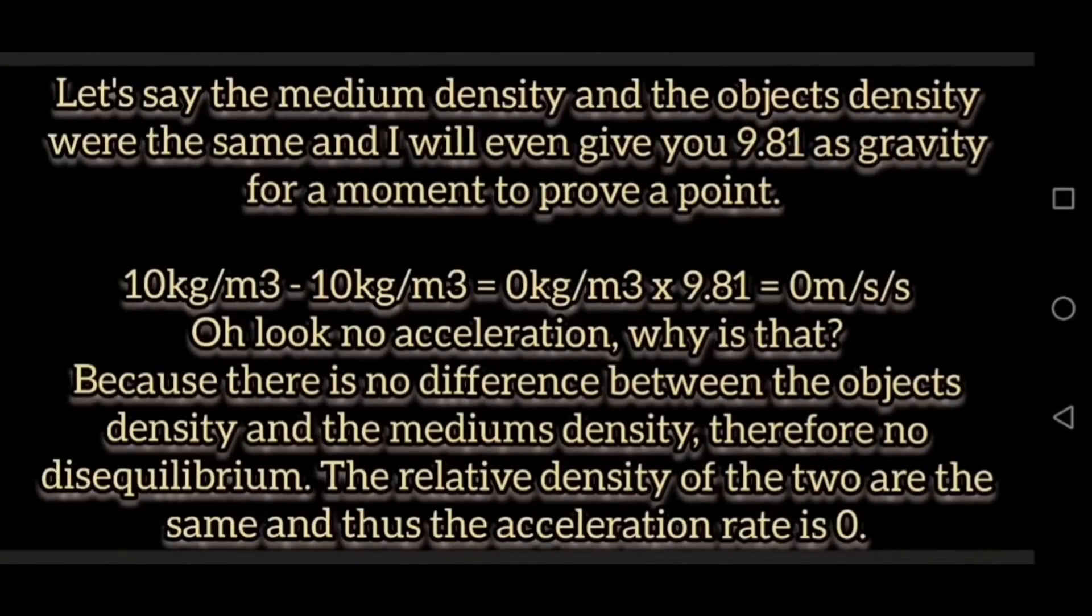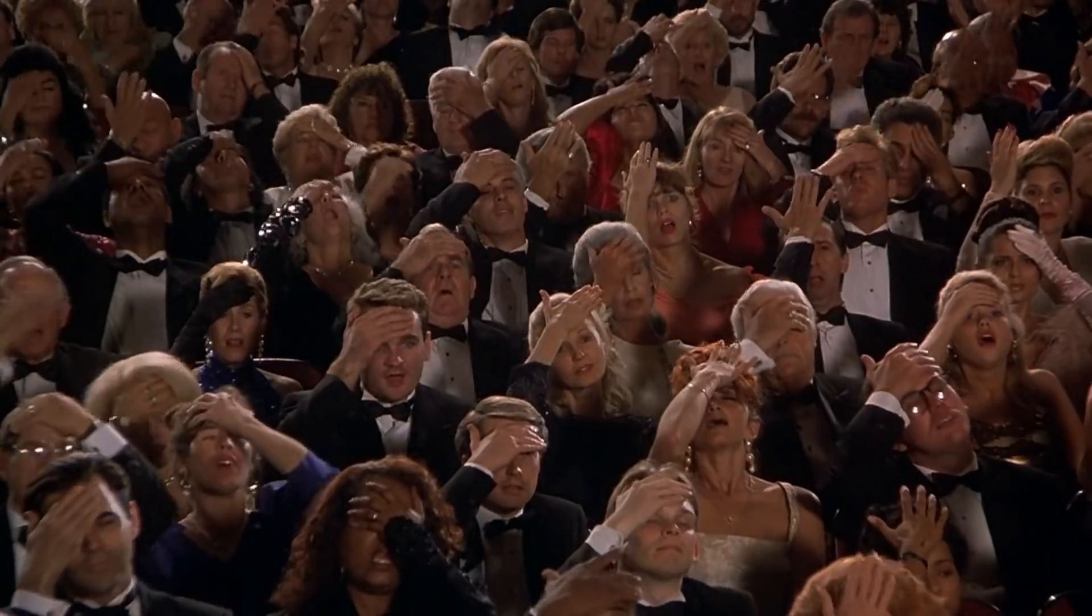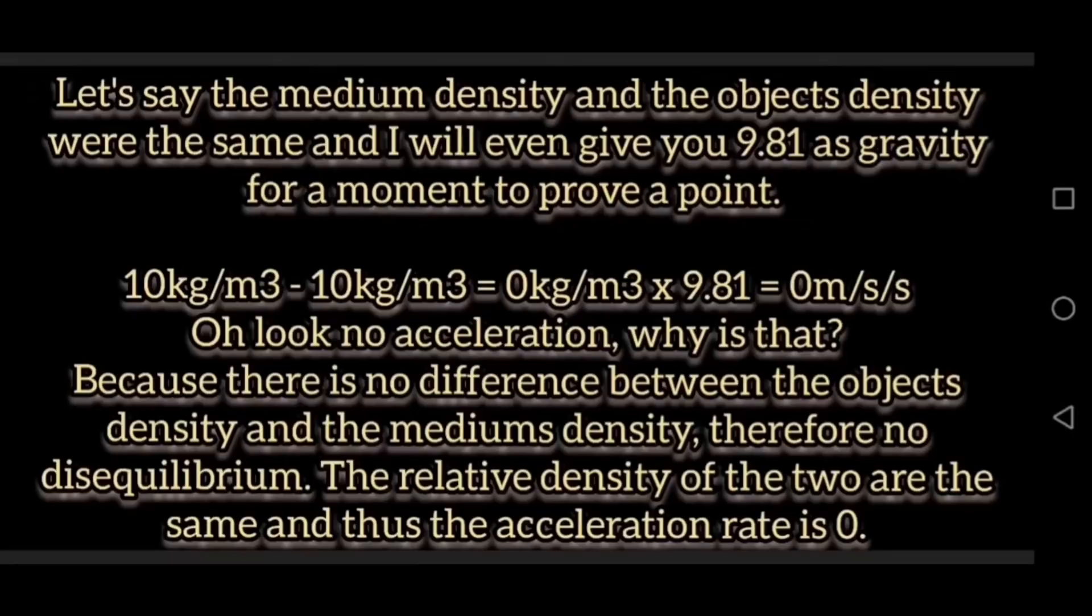So let's say the medium density and the object's density were the same, and I will even give you 9.81 as gravity for a moment to prove a point. 10 kg/m³ minus 10 kg/m³ equals 0 kg/m³ times 9.81 equals 0 m/s/s. Oh look, no acceleration. Why is that? Because there is no difference between the object's density and the medium's density, therefore no disequilibrium. The relative density of the two are the same, and thus the acceleration rate is 0. Again, proving it's all to do with the density of the object and the density of the medium, relative density, or differential density, or whatever you want to call it. But basically, the relative density, so one density relative to another density, so just how left can be relative to right, it's one density relative to another density. So again, proving that it's the density of the object relative to the density of the medium that actually causes the acceleration.